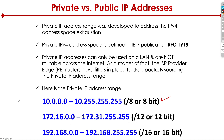The next range is 172.16.0.0 through 172.31.255.255 — it's a slash 12. And the third one is 192.168.0.0 through 192.168.255.255 — that's a slash 16.